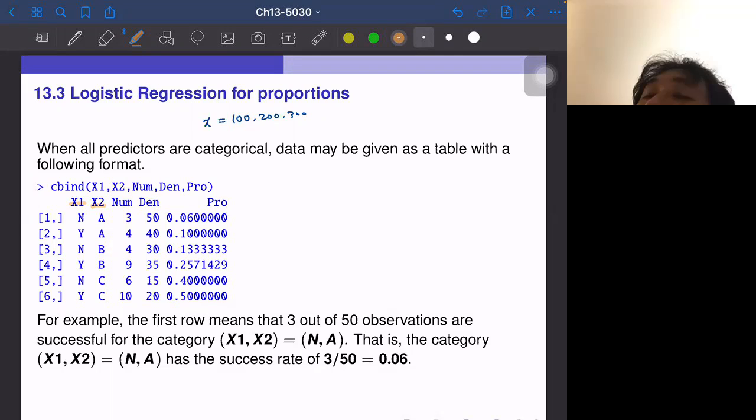Then we have basically 50 observations for the first row. So 50 observations have X1 equal to N and X2 equal to A. Then the number of successes is here. So if X1 is N and X2 is A, then three out of 50 succeeded, so that proportion is 0.06. Then other cases are similar. We have all six pairs, different numbers of observations, different numbers of successes, then the sample proportion.